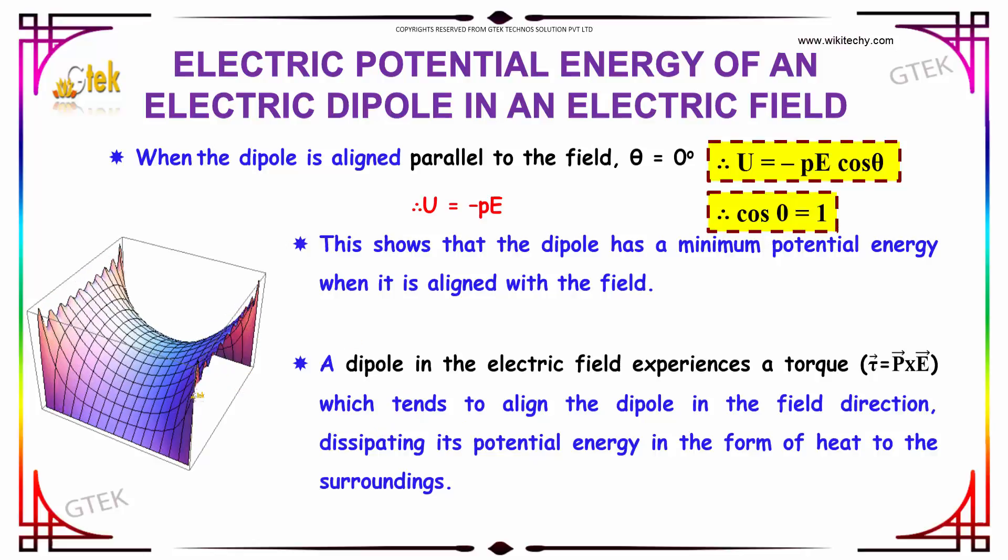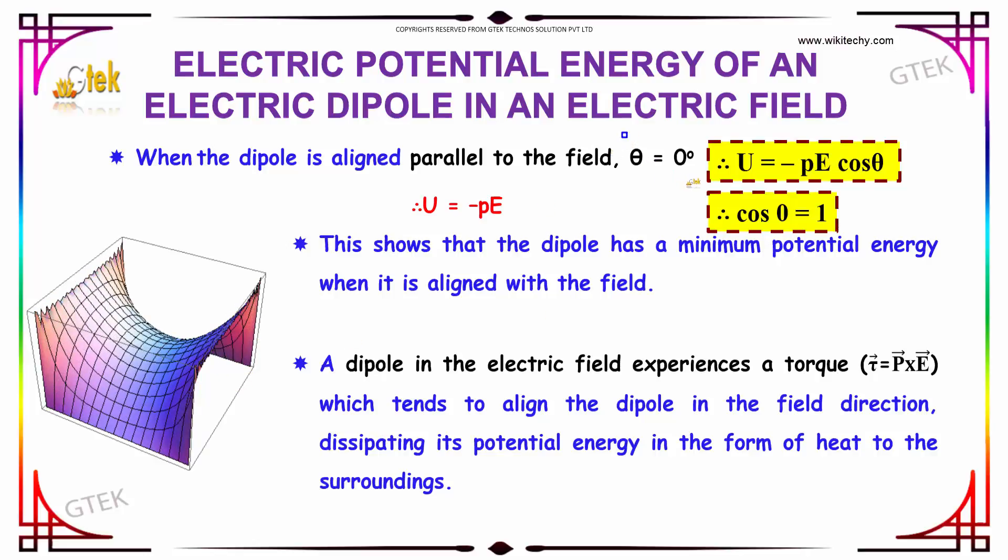When the dipole is aligned parallel to the field, θ = 0. Substituting this value: U = -pE cos(0) = -pE cos 0. The value of cos 0 is 1, so 1 multiplied by -pE gives -pE.